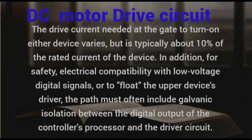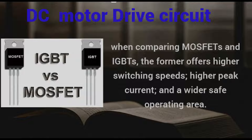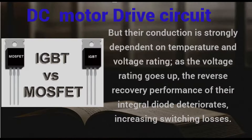the path must often include galvanic isolation between the digital output of the controller's processor and the driver's circuit. In general, when comparing MOSFETs and IGBTs, the former offers higher switching speeds, higher peak current, and a wider safe operating area. But their conduction is strongly dependent on temperature and voltage rating; as the voltage rating goes up, the reverse-recovery performance of their integral diode deteriorates, increasing switching losses.